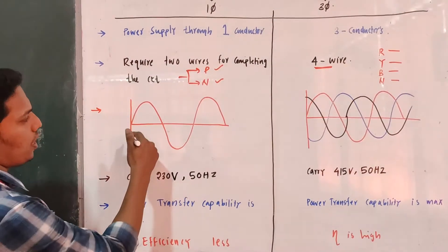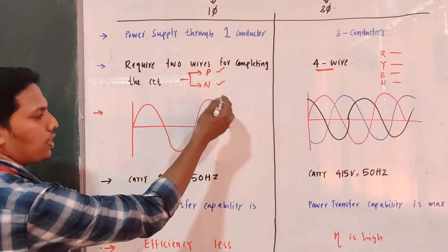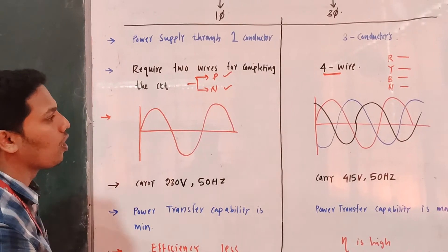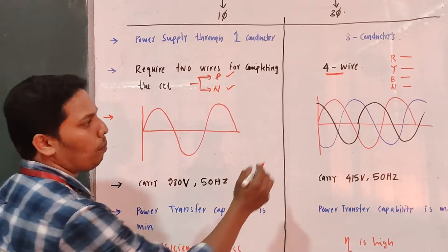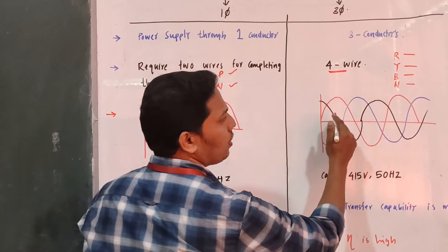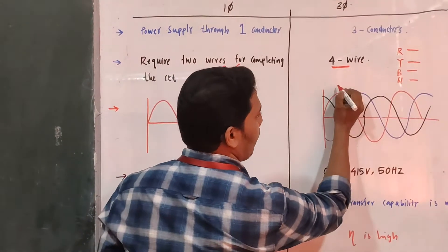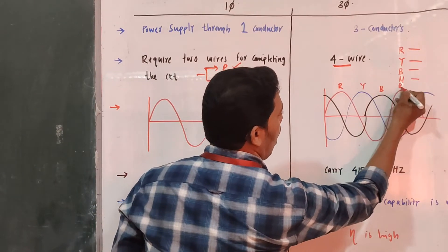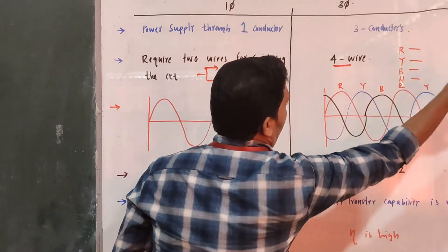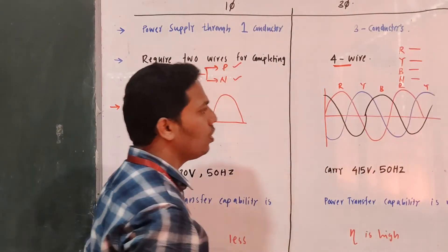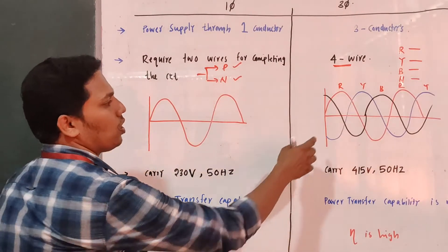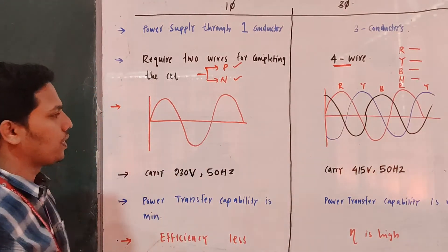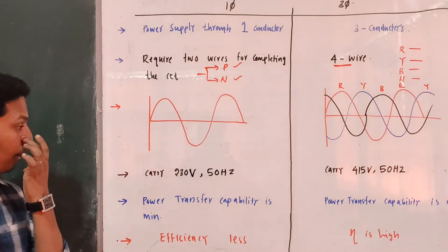This is the representation of a single phase supply — only a single sine wave. But in three phase there are three supplies: R, Y, B, R, Y, B, and so on. So this is the representation of a three phase supply and this is the representation of a single phase supply.